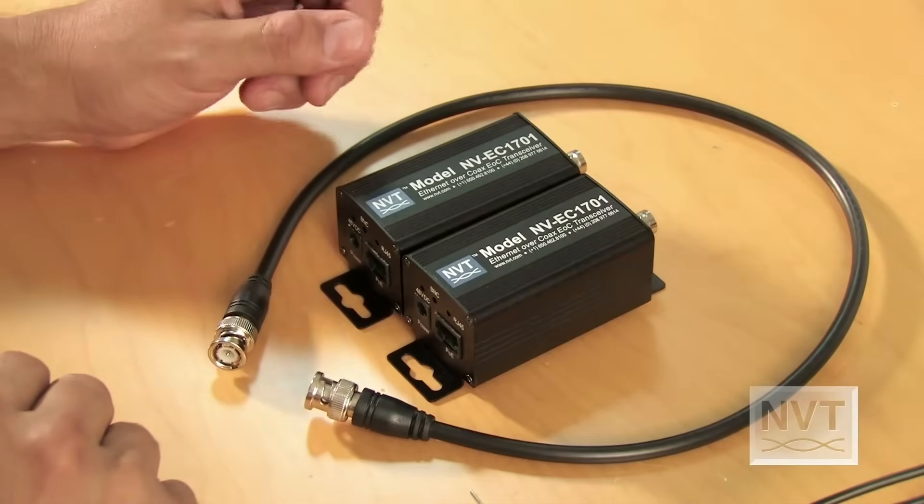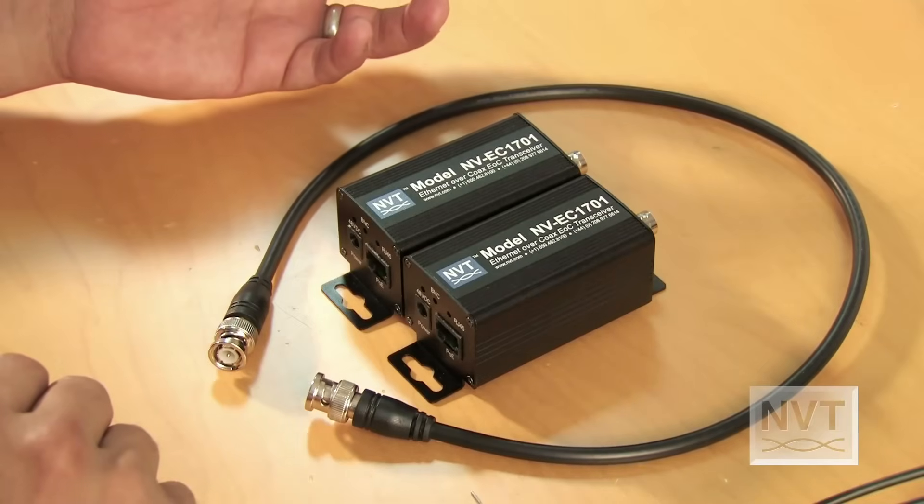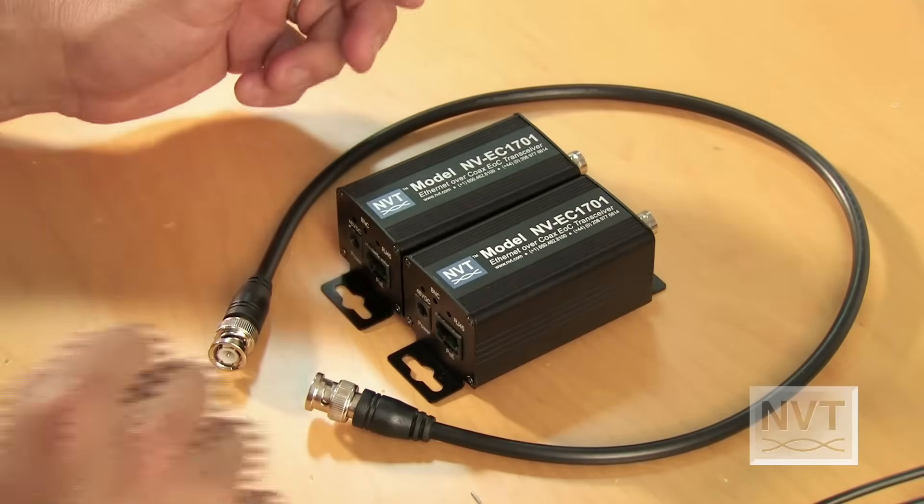To start the joining process, you first connect two 1701 transceivers using a coax jumper cable.